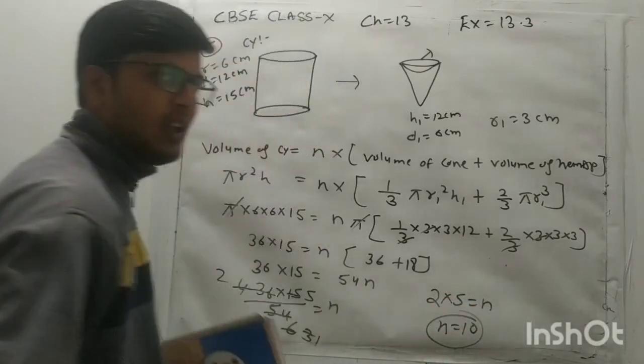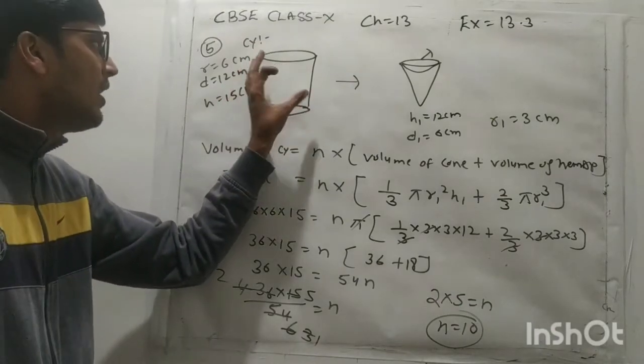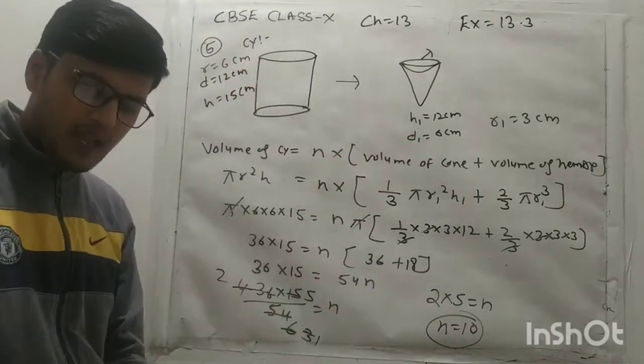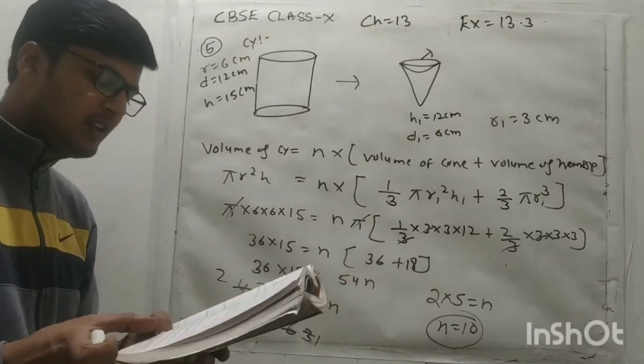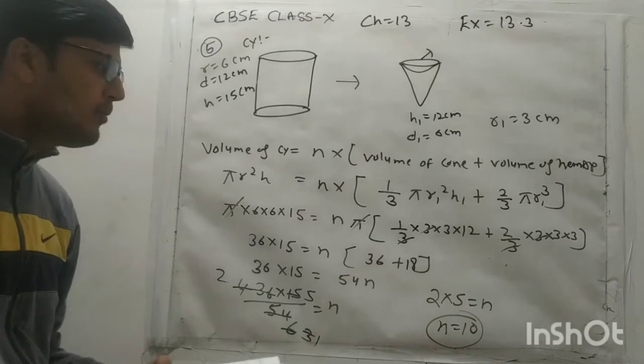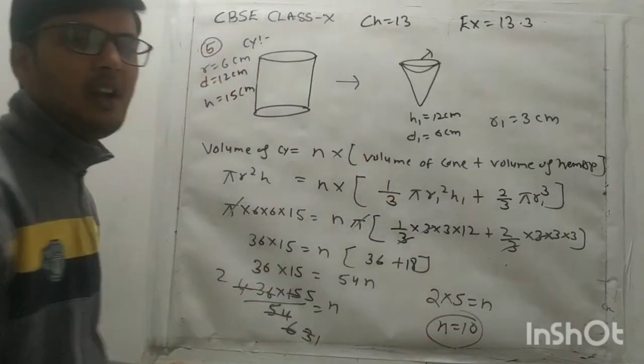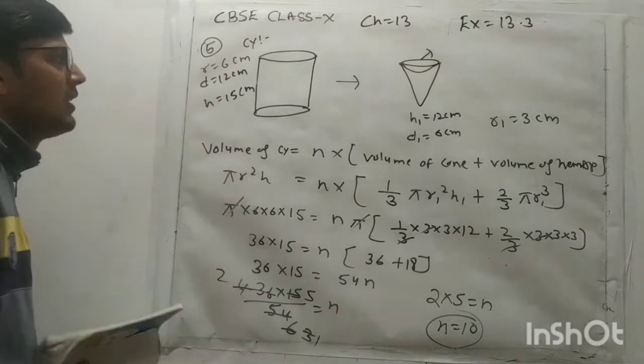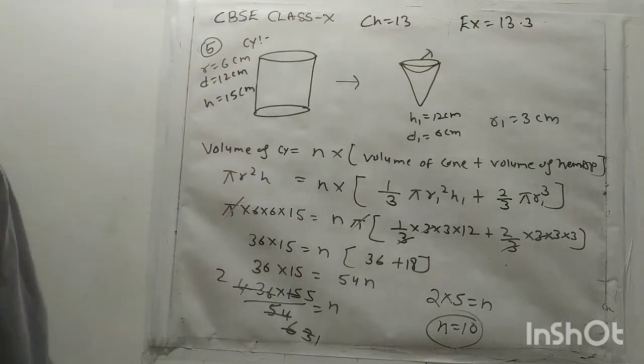It means ye jo aapka cylindrical shape ice cream se pura container full hai, isme se kitne cones aapke fill honge. Question is what, find the number of such cones which can be fitted with ice cream. So 10 cones, number of cones is 10 which is fitted in ice cream. So this is your question number 5. Is that clear? Now we move to question number 6.